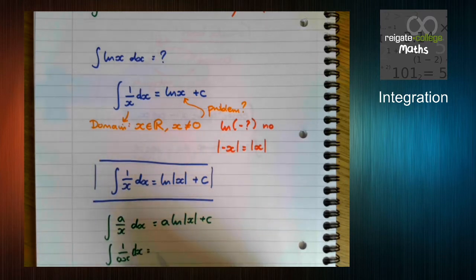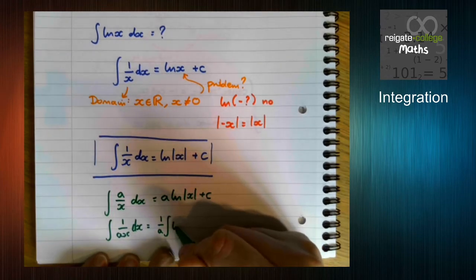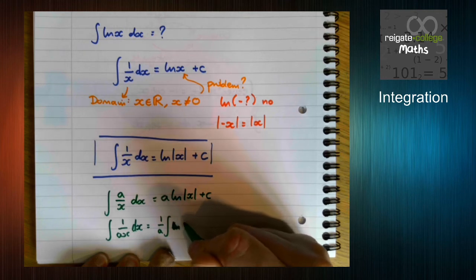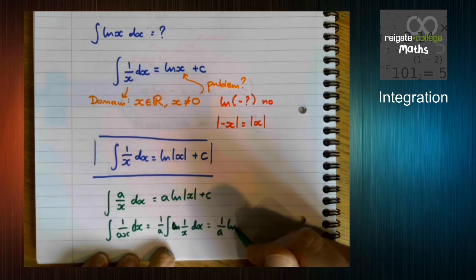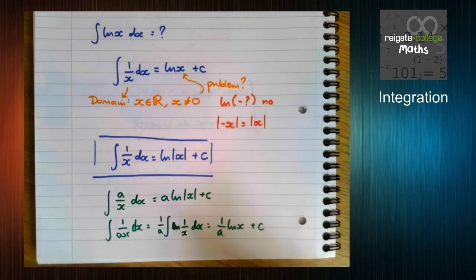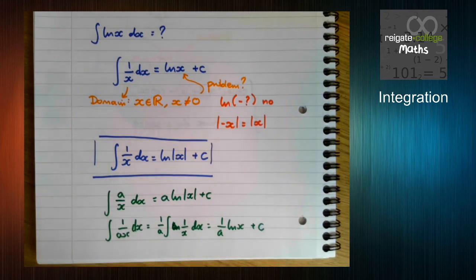And this is true if we have it that way round as well, because we can think about this as 1 over a times 1 over x. Now we'll learn a general form later on that kind of potentially contradicts this, but in fact it doesn't and I'll explain why when that video happens.